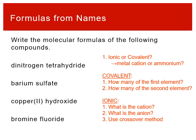Dinitrogen tetrahydride — nitrogen is a non-metal and the word ammonium doesn't show up, so this is covalent. The other thing I can see is that there are prefixes in this name: di and tetra. Right away, that means this is covalent — even if I don't know nitrogen is a non-metal, if the name has prefixes in it, it has to be a covalent compound. So dinitrogen is two nitrogens, tetrahydride is four hydrogens. Di is two, tetra is four. So this is N₂H₄. We maintain the same order with nitrogen first and hydrogen second.